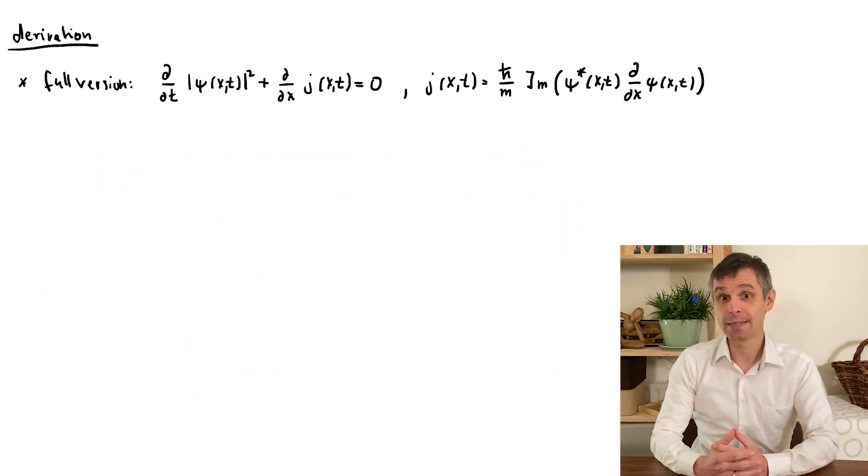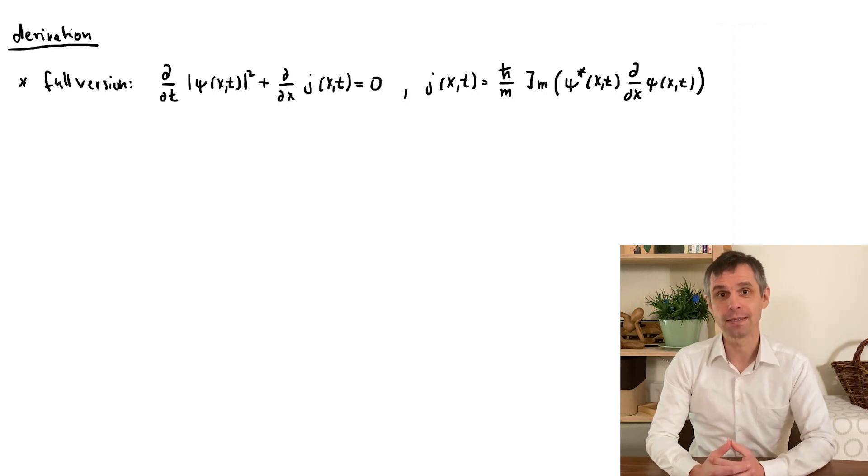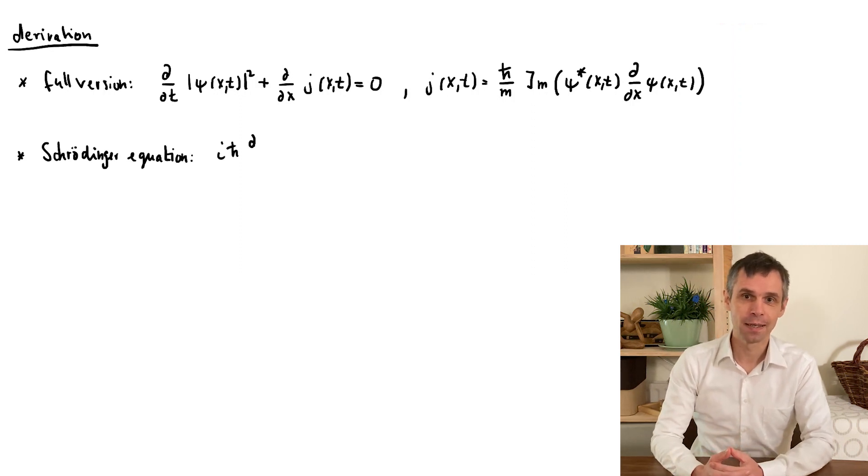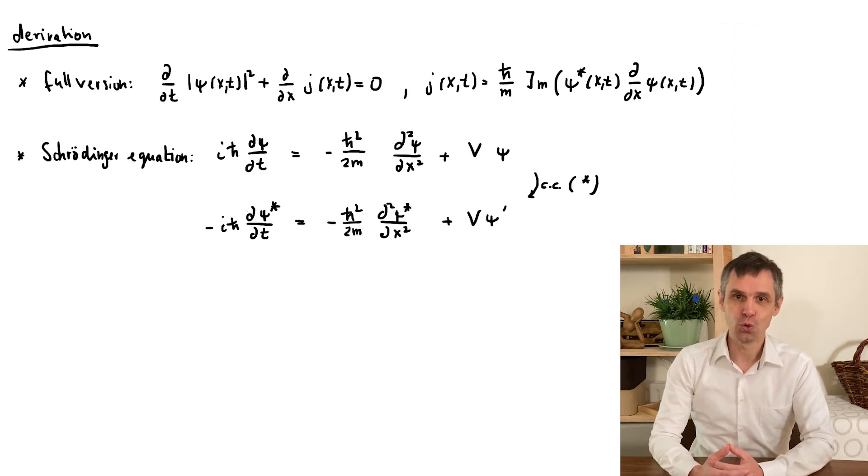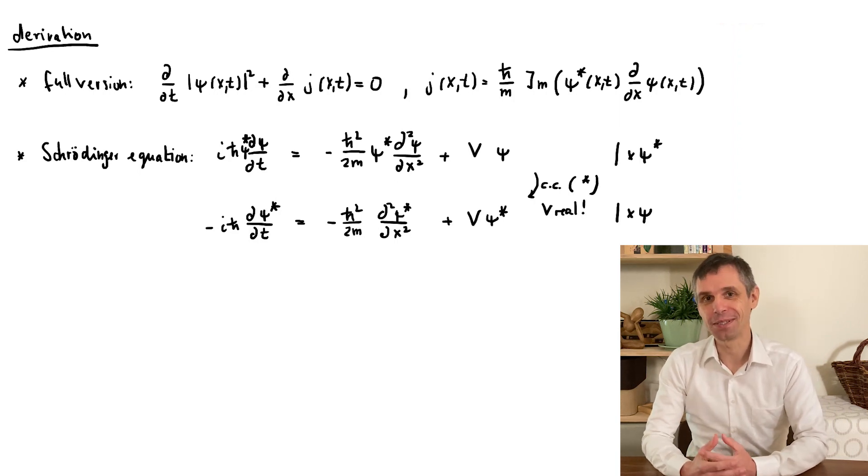So as promised, here is the derivation of the probability current, for the general case with time dependence. The key step is to take the difference between the time-dependent Schrödinger equation and its complex conjugate, after multiplying these by a factor so that the potential drops out. Here we use that the potential is always real. That will actually be guaranteed by our postulates.